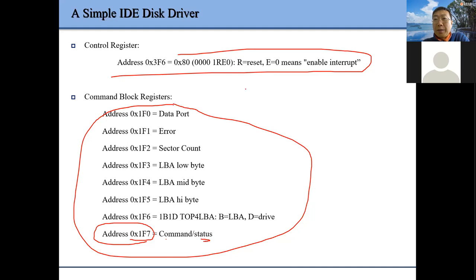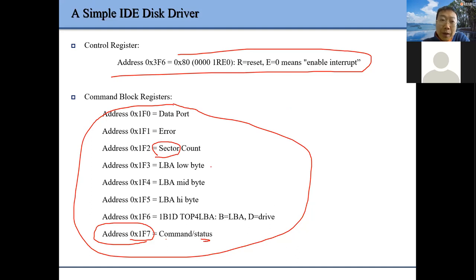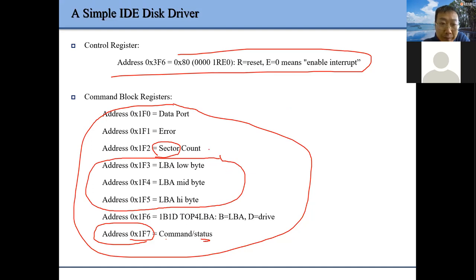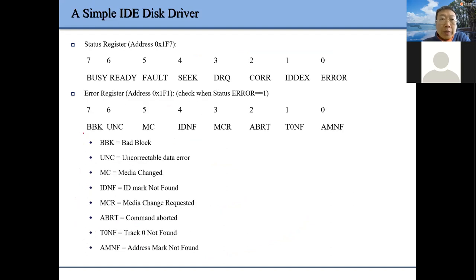When we want to operate on a hard disk, the most common operations are read and write — we want to read data from a sector or write data to a particular sector. We need to set up the address — which sector we want to write to — and how many sectors we need to read, then we issue the command.